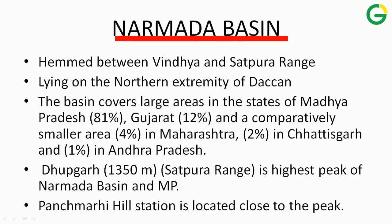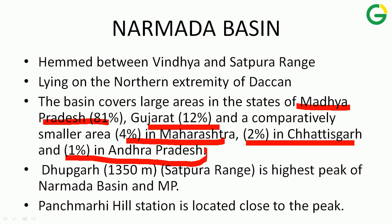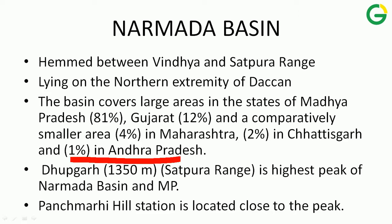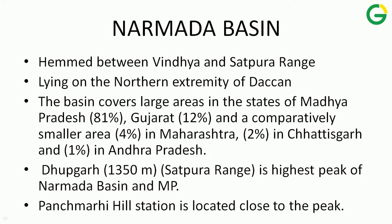The Narmada Basin is hemmed between the Vindhya and Satpura ranges, lying on the northern extremity of the Deccan. We have already talked about the Deccan and its location with respect to Narmada in Part 1. The basin is composed of states: Madhya Pradesh 81%, Gujarat 12%, Maharashtra 4%, Chhattisgarh 2%, and Andhra Pradesh 1%. It is very interesting — and important — that Andhra Pradesh is related to the Narmada Basin. The Dhupgat peak, 1350 metres high in the Satpura range, is the highest peak of the Narmada Basin as well as of Madhya Pradesh, and Panchmadhi hill station is located close to this peak.